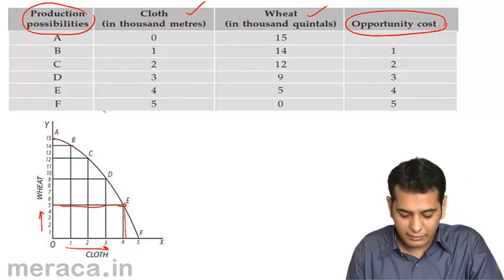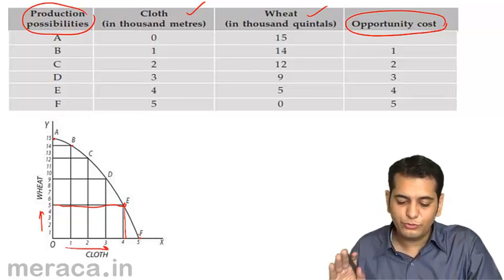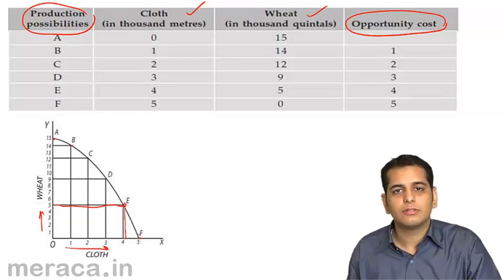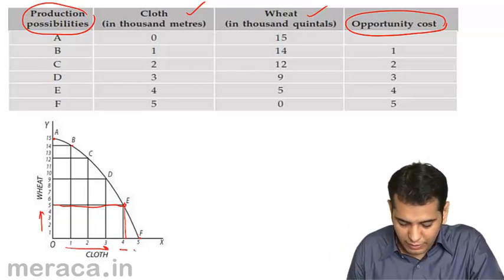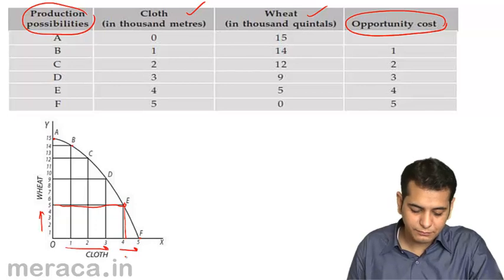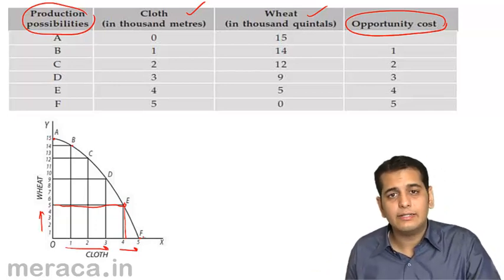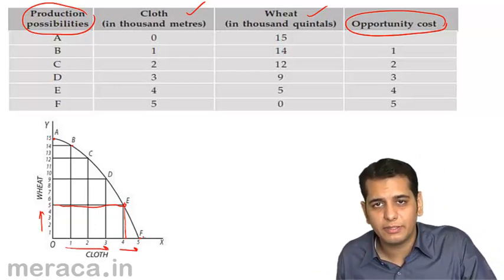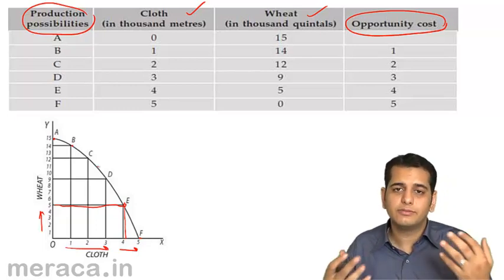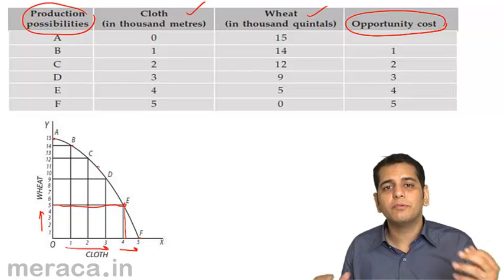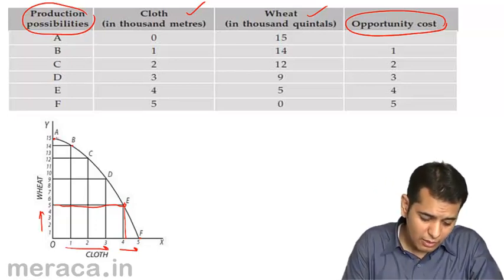And finally, at point F, no units of wheat are produced — only cloth is produced. How many units? 5 units. So this is how we derive a production possibility curve. These are the various combinations which give us the production possibility curve.